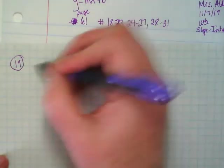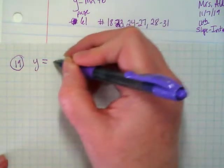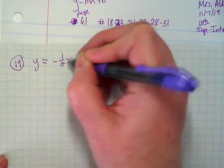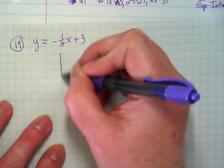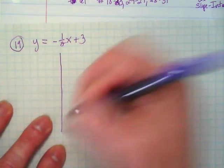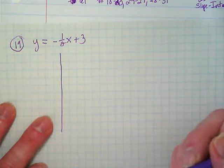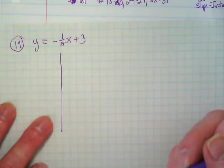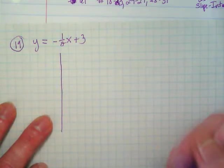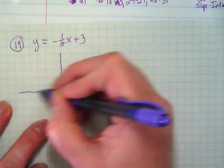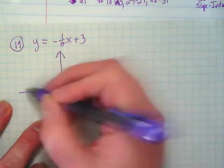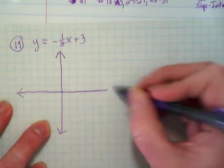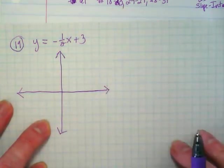Okay, so let's write down number 19. It's y is equal to negative 1 half x plus 3. The directions for this section of 61 for 18 through 23 says sketch the graph of each equation. Well, we're going to not just sketch it. We're going to make it pretty clear because we're using graph paper. So make a coordinate plane.